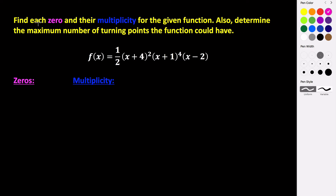In this video we want to identify each zero and the multiplicity of that zero for this given function, and also determine the maximum number of turning points that this function could have. To find each zero we can just look at our polynomial function in factored form, and remember that whatever our factor is, if we just set it equal to zero, that's going to be one of our zeros.